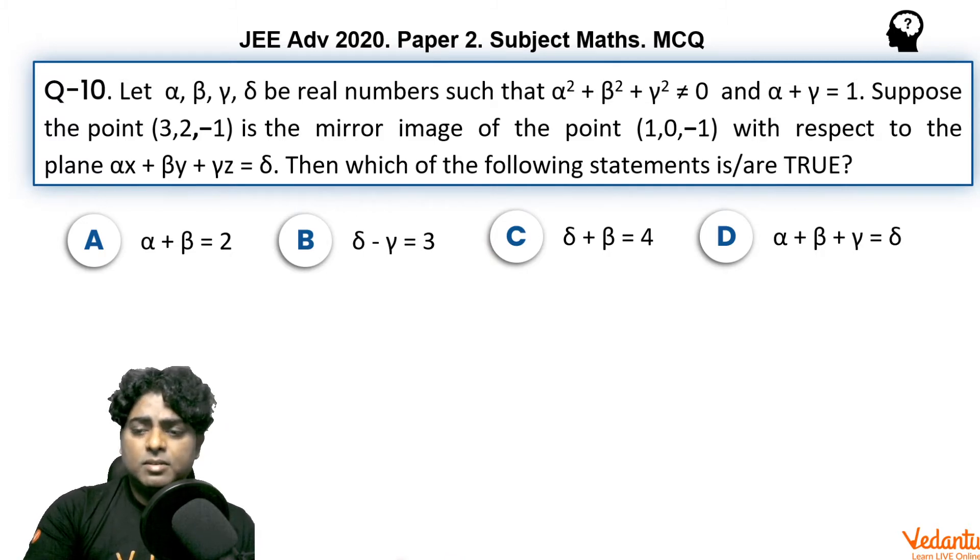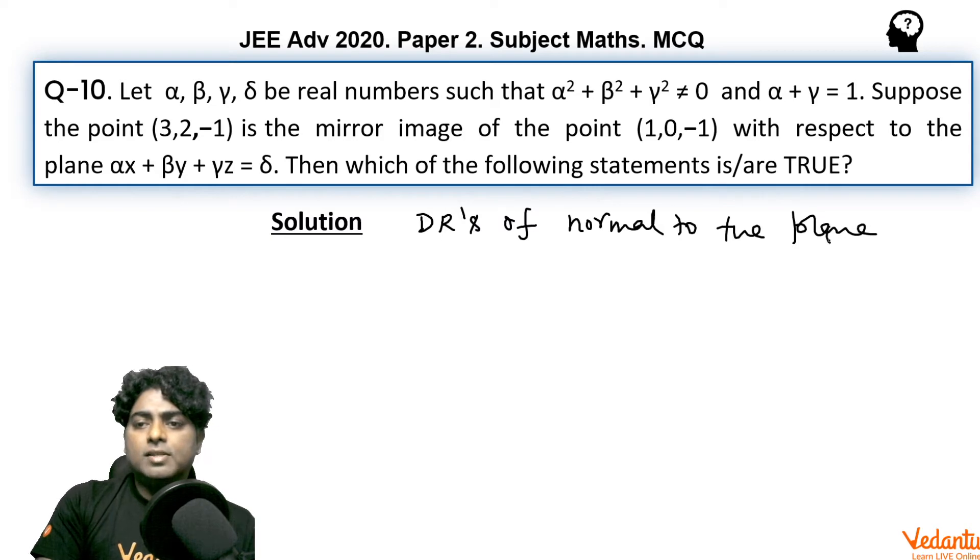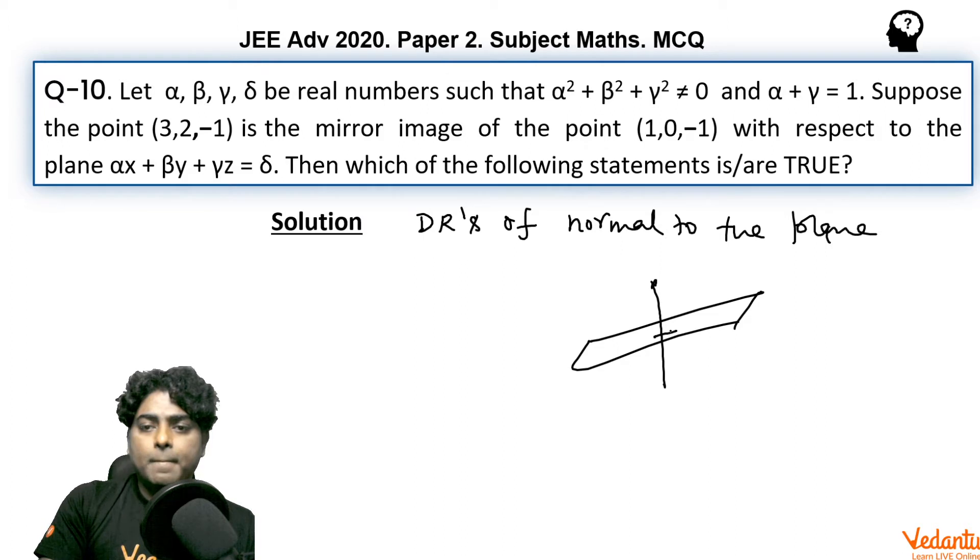So we need to find α, β, γ, δ. I'd say the question was on the easier side. See, if we talk about the direction ratios of normal to the plane - since the two points are mirror images of each other about the plane, we can say that the line joining those two points will be one of the normals to the plane. Also, the coefficients of x, y, z in the equation of the plane represent direction ratios of normal to the plane.